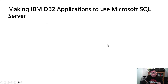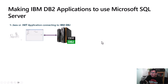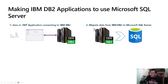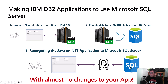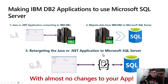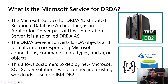If we take IBM DB2 as today's example — say you have a Java or .NET application connecting to IBM DB2 and you migrate the data to Microsoft SQL Server — you have to retarget your application to SQL Server. Instead of refactoring everything, that's where the DRDA service comes into play. It gives you a translation layer to retarget existing applications and clients to SQL Server with almost no changes to your application.